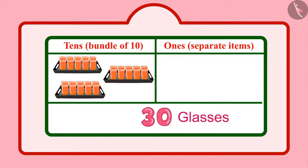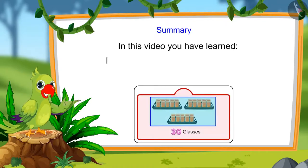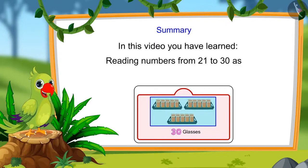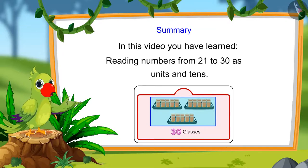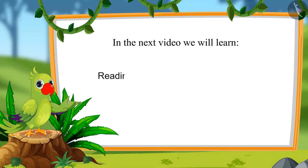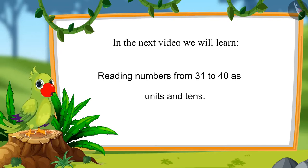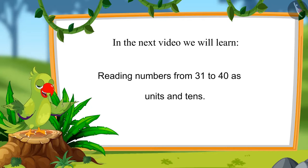So, children, today 30 glasses of sherbet were made in Chotu's house. That was all for today. In this video, you learned numbers from 21 to 30 and how to read those numbers as units and tens. In the next video, we will learn to read numbers from 31 to 40 and how to read those numbers as units and tens. Until then, bye, children!